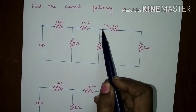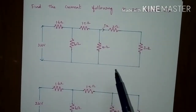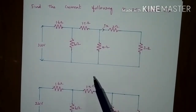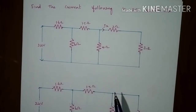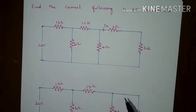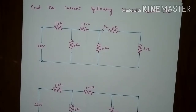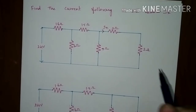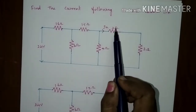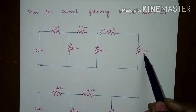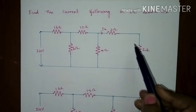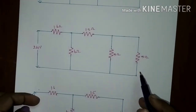To find the current flowing through this branch, first we have to reduce the circuit and find the equivalent resistance and the total current flowing through the circuit. After that, by going through a reverse procedure and by using the current division rule, we can find the current. See, this 2 ohms and 3 ohms are in series, so adding together we will get 5 ohms here.